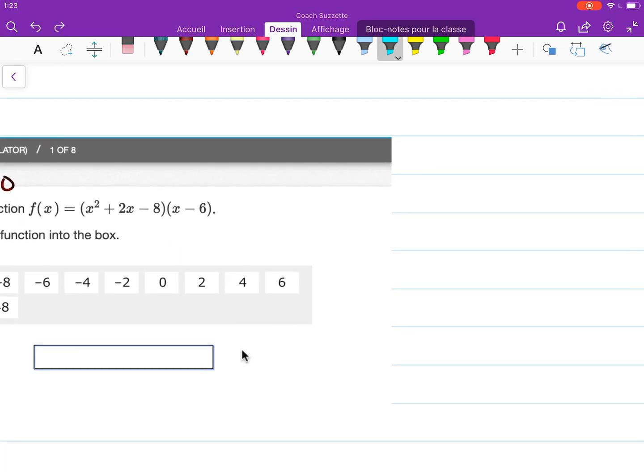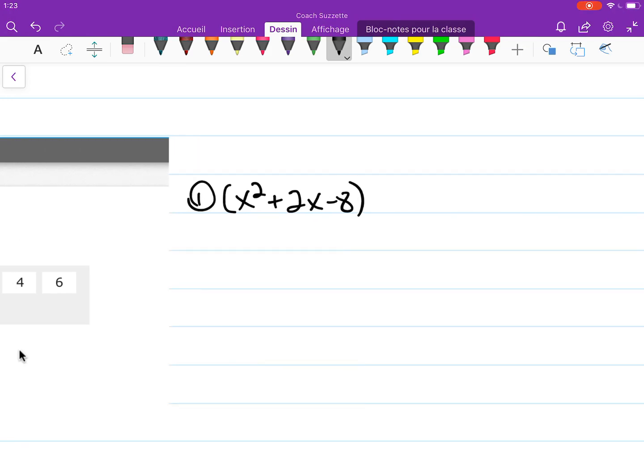So the first thing is we want to put this entire equation equal to 0. Let's solve for x. So that would look like (x² + 2x - 8)(x - 6) = 0.